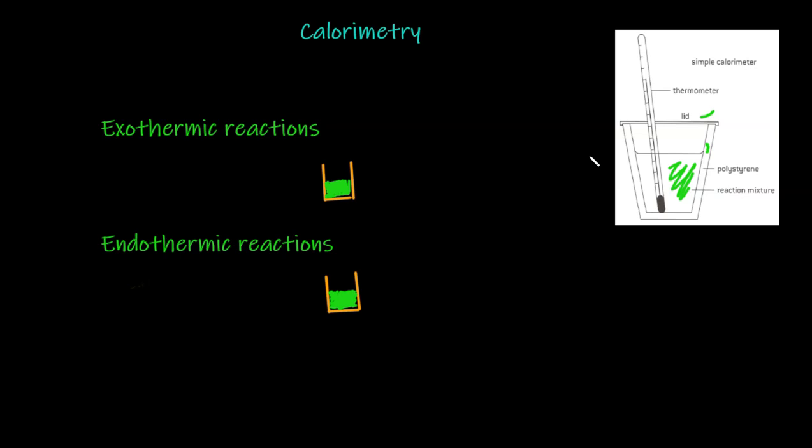In a simple calorimeter, all the heat evolved in an exothermic reaction is used to raise the temperature of a known mass of water. For endothermic reactions, the heat transferred from the water to the reaction can be calculated by measuring the lowering of the temperature of a known mass of water. Essentially, calorimetry is the process of measuring the amount of heat released or absorbed during a chemical reaction, allowing us to determine whether a reaction is exothermic or endothermic.